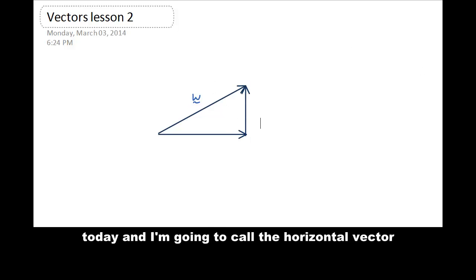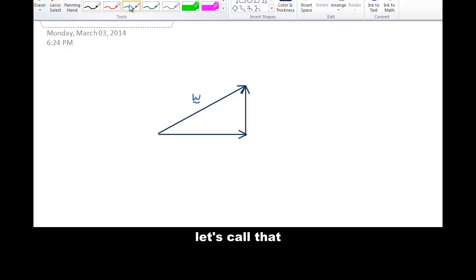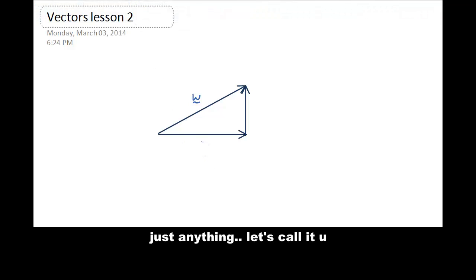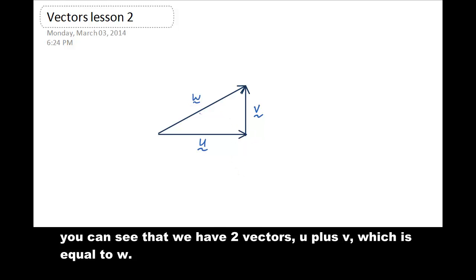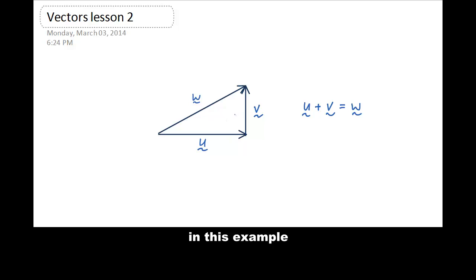And I'm going to call the horizontal vector, let's call it u. And let's call this v. And you can see here that we have two vectors, u plus v, so hopefully you remember how to add vectors. u plus v is equal to w in this example. So w is therefore equal to u plus v, and u is the horizontal component, and v is the vertical component.